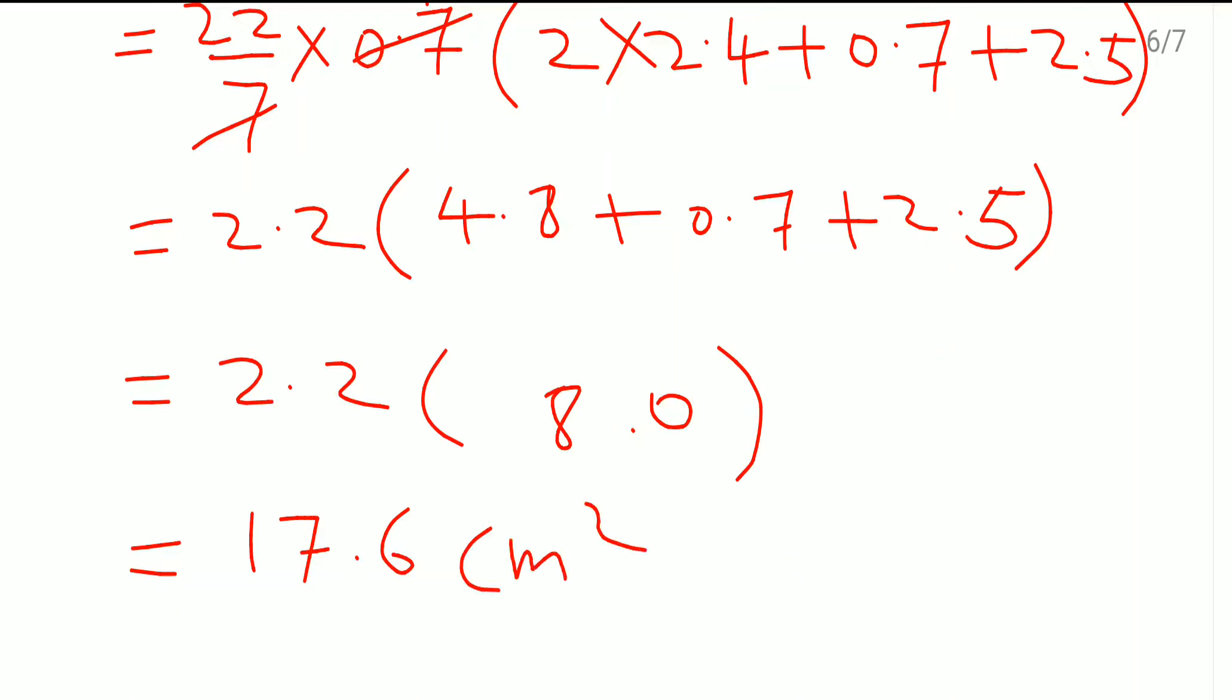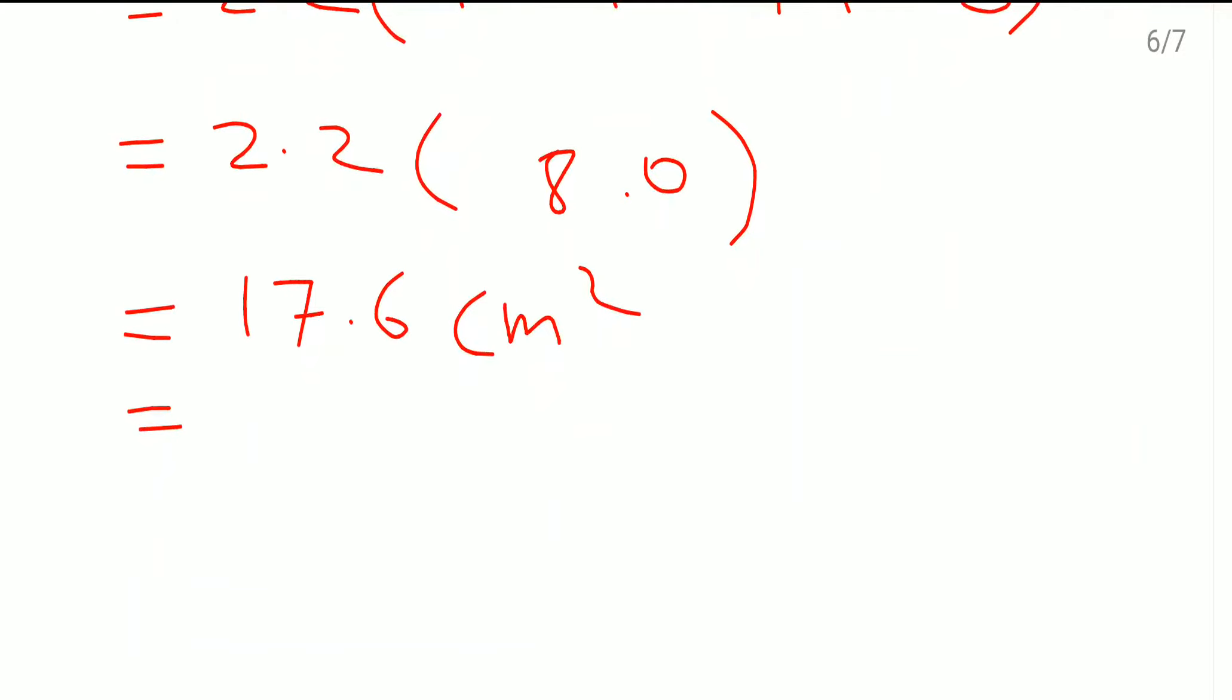But what they said, you know, they told you write the answer to the nearest centimeter square. Simply you have to round off this number. So when we do round off of this number, we are getting it as 18 cm².